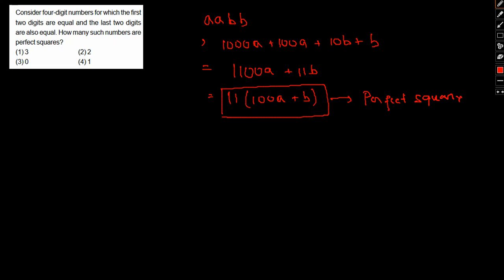Now for this to be a perfect square, 100a + b has to be a multiple of 11, that is 11k. Because if it becomes a multiple of 11, then only we can call this a perfect square.